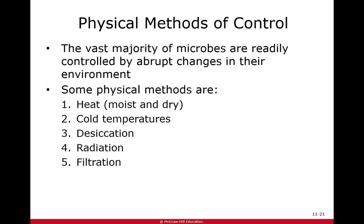We're going to specifically look at the physical methods of control. We can disturb or disrupt a lot of things about microbes if we change their environment abruptly. Some of the physical methods that are used would be moist or dry heat, cold temperatures, desiccation, radiation, and filtration. So let's look at all of these.